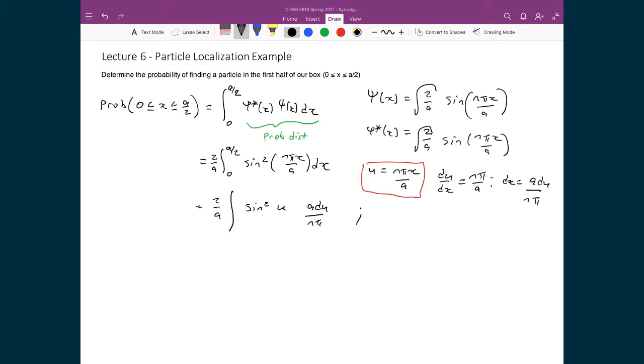If I substitute in 0 into u equals n pi x over a, that's just n pi times 0 over a, which gives me 0. So my lower bound has not changed. My upper bound, which is u for a over 2, now I'm plugging in a over 2. The a's cancel out, leaving me with n pi over 2. So my upper bound is now n pi over 2.